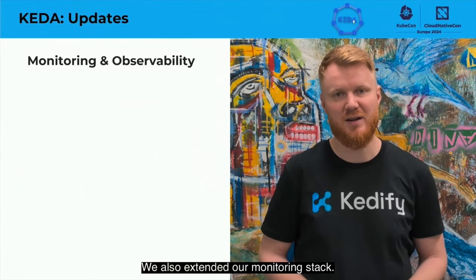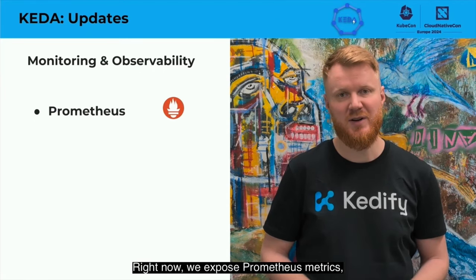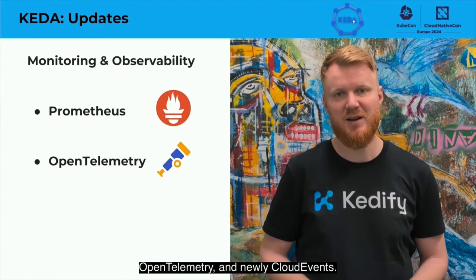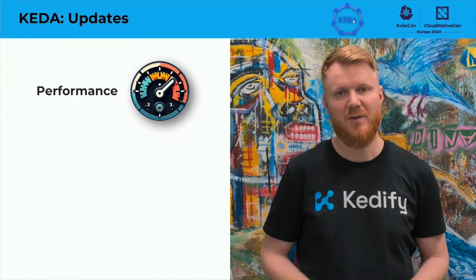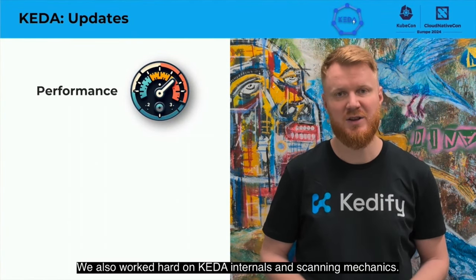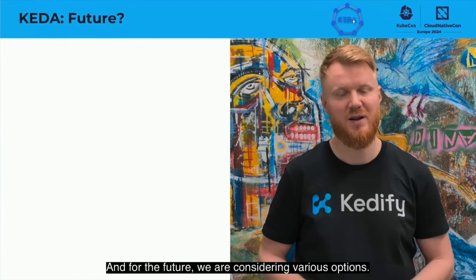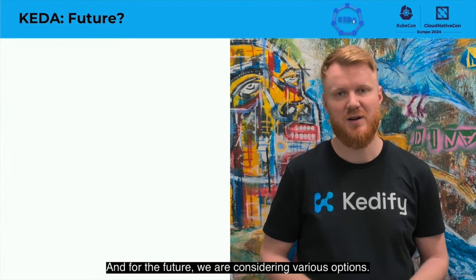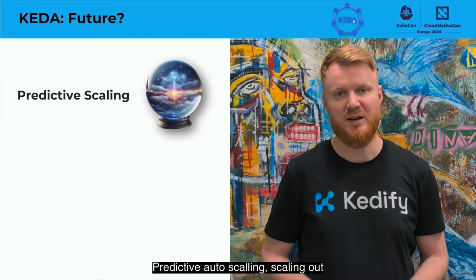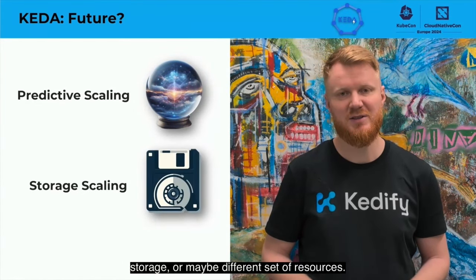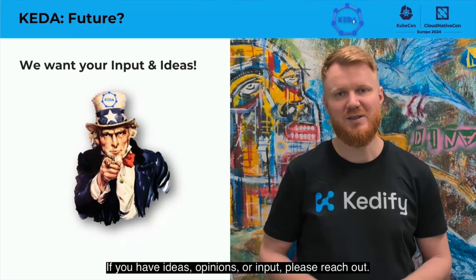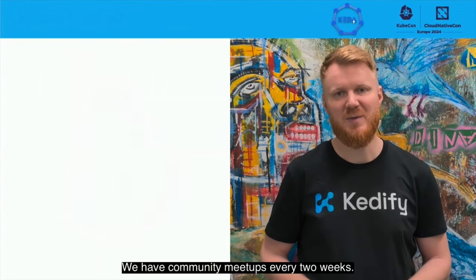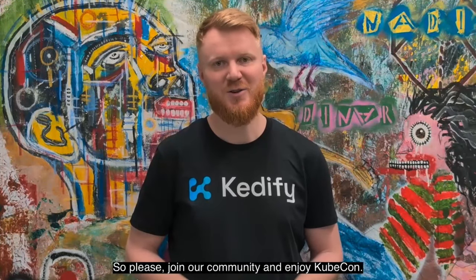We also extended our monitoring stack. Right now, we expose Prometheus metrics, OpenTelemetry, and CloudEvents. We are constantly working on improving the core and performance of Keda, and we also worked hard on Keda internals and scaling mechanics. For the future, we are considering various options: predictive auto-scaling, scaling out storage, or maybe different sorts of resources. If you have ideas, opinions, or input, please reach out. We have community meetups every two weeks and a Slack channel, so please join our community and enjoy KubeCon.